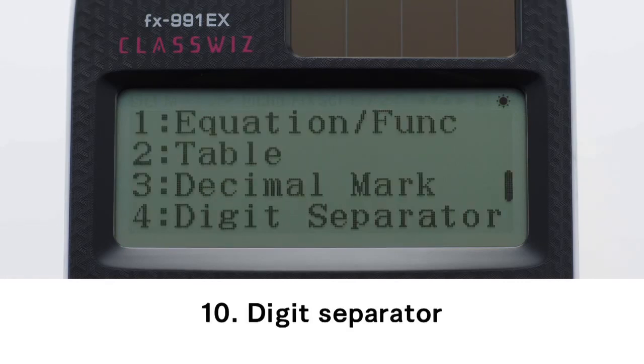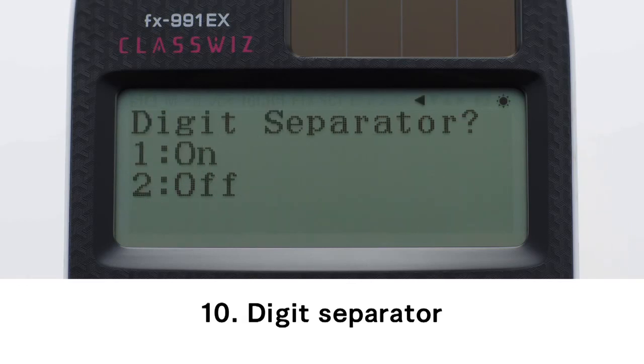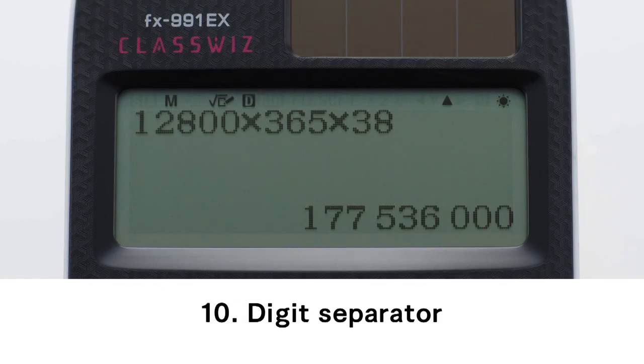Digit separator. Press the setup key and the cursor key and select Digit separator by pressing 4. Select Digit separator 1. In this instance, press 1. Separation every three digits makes even large numbers easy to read.